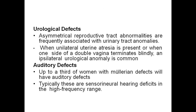Urological defects: asymmetrical reproductive tract abnormalities are frequently associated with urinary tract anomalies. When unilateral uterine atresia is present or when one side of a double vagina terminates blindly, an ipsilateral urological anomaly is common. Auditory defects: up to a third of women with a Mullerian defect will have auditory defects, typically sensorineural hearing deficits in the high frequency range.